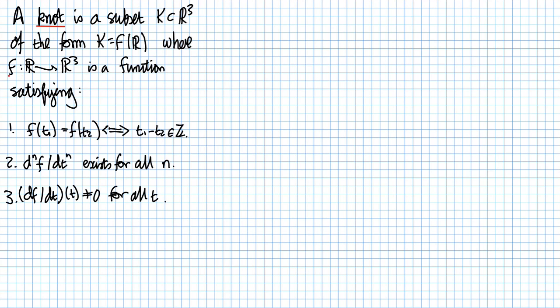Before we start, let's see what is a function F from R to R³? Well, that's like an infinite path living in three dimensions, and K is just its image, so we're not parameterizing the path in any way.